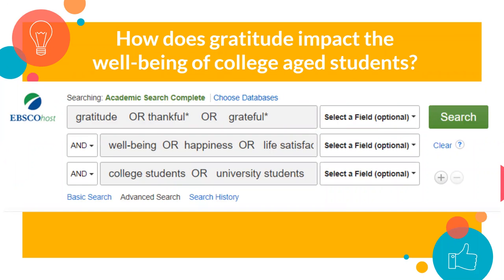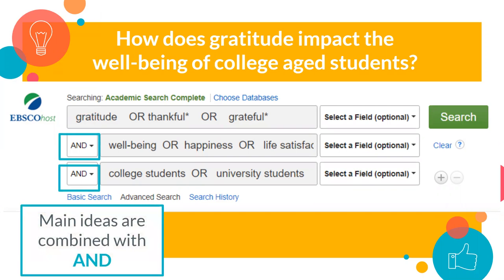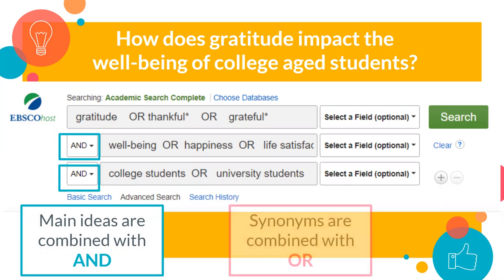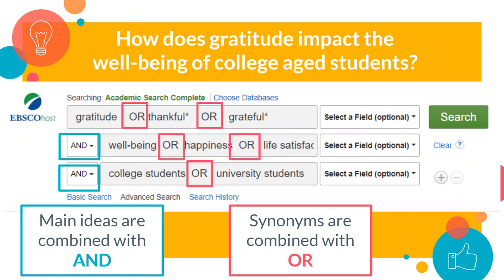Let's see this in action. Here we are in an EBSCO database. Putting it all together isn't as hard as you think. Remember our research question: How does gratitude impact the well-being of college-age students? This is how it would look when you put it into the database. See the boxes? Each separate box is going to hold a different concept. So gratitude, well-being, and college students are all separated by AND. Your synonyms, however, will be together within the boxes and separated by OR. This is the biggest piece that can mess with your search results — your concepts are separated in different boxes, and your synonyms are together in the same box.